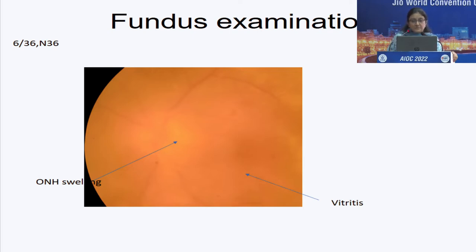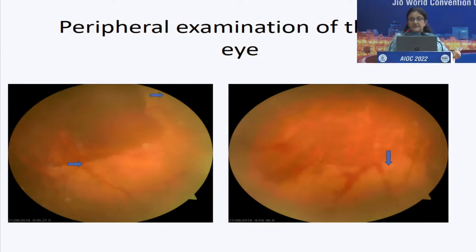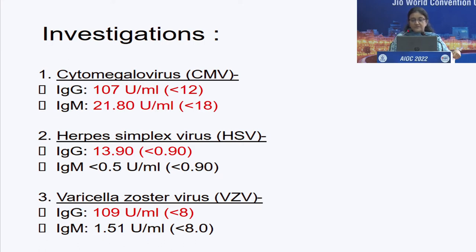What the ophthalmologist had apparently missed was a detailed examination of the left eye — specifically a peripheral examination. The patient had vision of 6/36 and N36 in the left eye, optic nerve head swelling, and classical tongue-shaped peripheral lesions very suggestive of a viral retinitis.